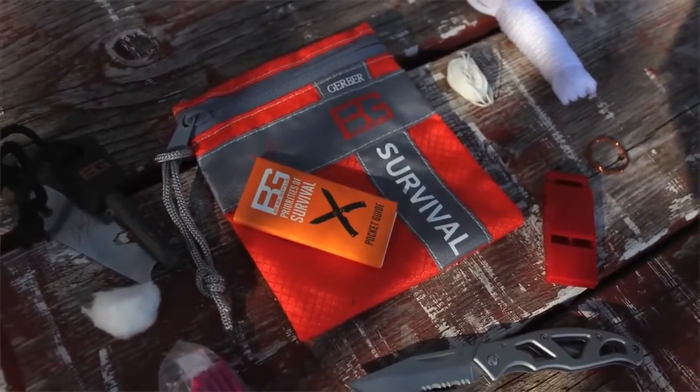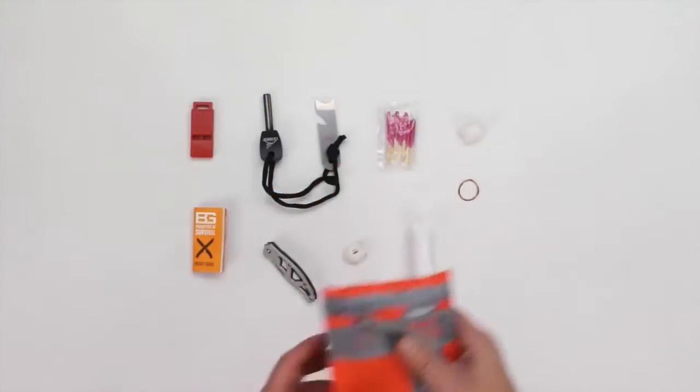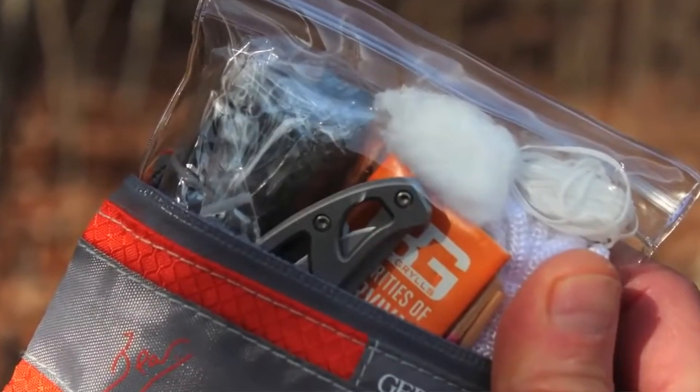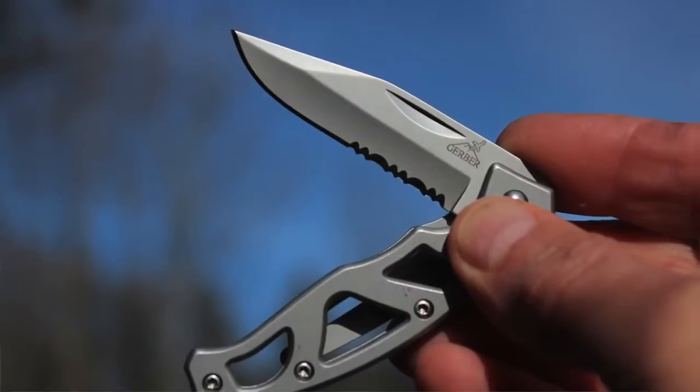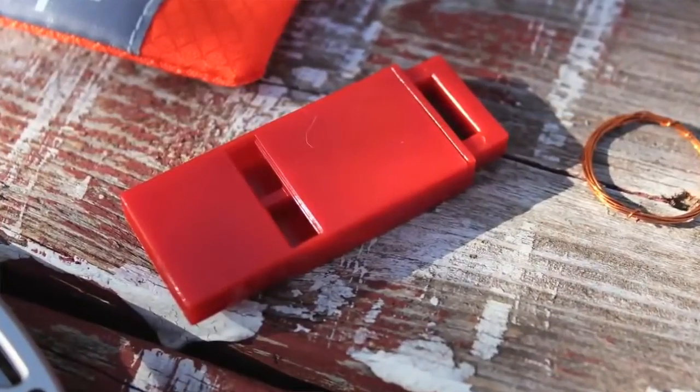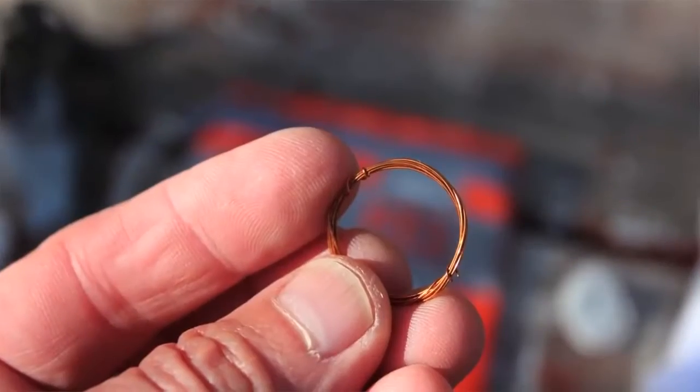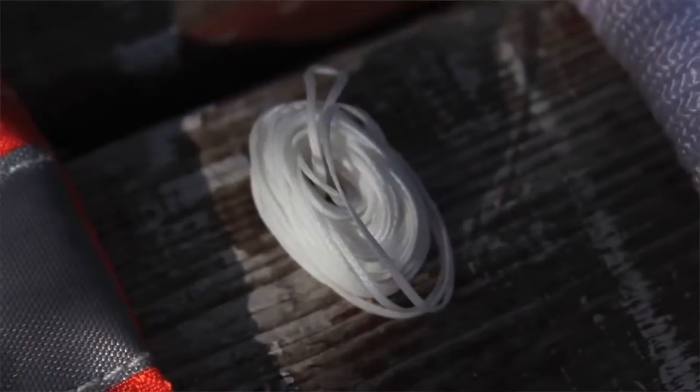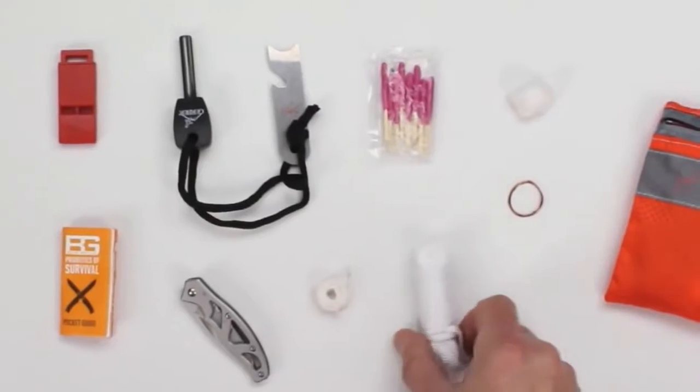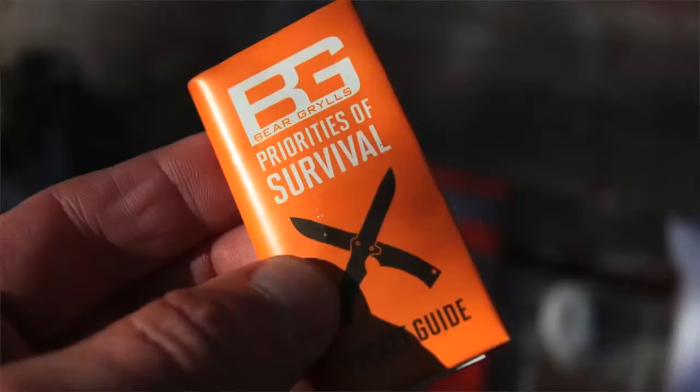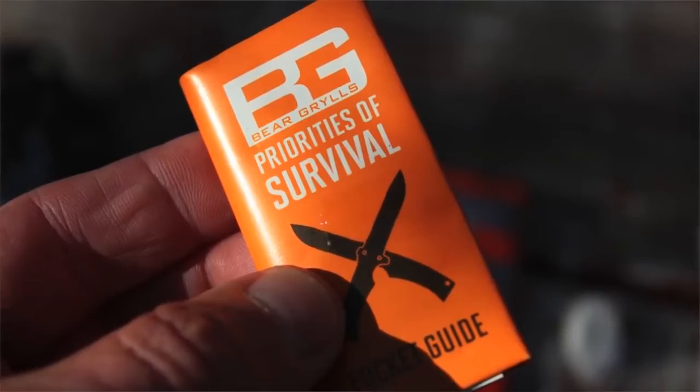So we have the outer ripstop nylon bag, a clear plastic waterproof inner bag, the Gerber mini paraframe knife, an emergency whistle, fire steel and striker, waterproof matches, snare wire, waxed thread, emergency cordage, cotton ball for tinder, and the Bear Grylls Priorities of Survival pocket guide.